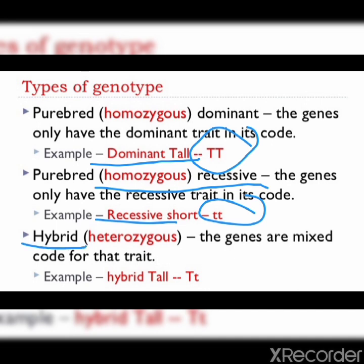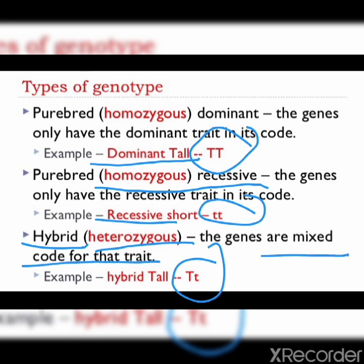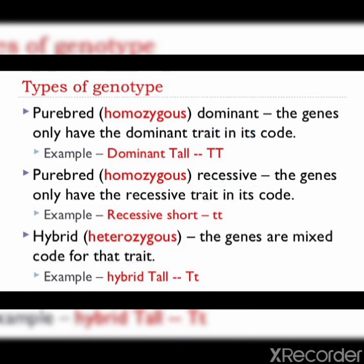The third type is hybrid or heterozygous. Heterozygous means a dissimilar pair — one allele will be dominant and one will be recessive. For example, capital T small t — one dominant and the other recessive, so the genes have a mixed code for that trait. The plant will be tall because capital T, the dominant gene, is present.